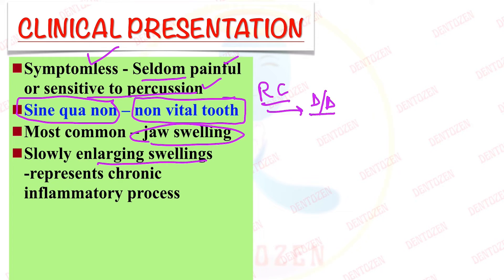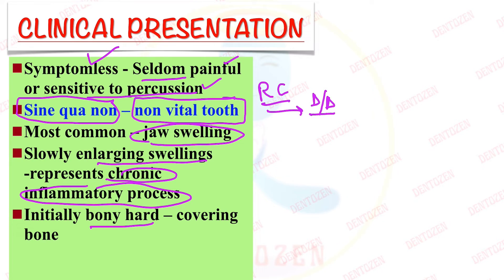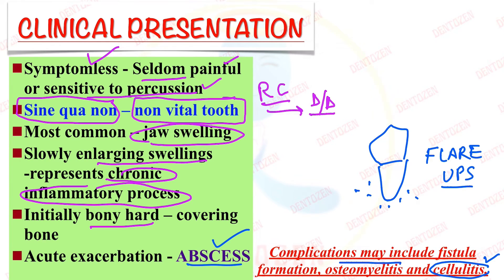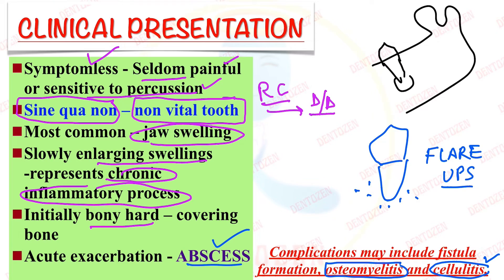Radicular cyst is the most common cause of jaw swelling. It is a slowly enlarging swelling due to the chronic inflammatory process occurring over a long duration. Initially it will be a bony hard swelling covered by bone, but later bone resorption causes the bone to thin out. In long-standing cases there can be a sudden flare-up leading to abscess formation. Complications include fistula formation, osteomyelitis, and cellulitis.